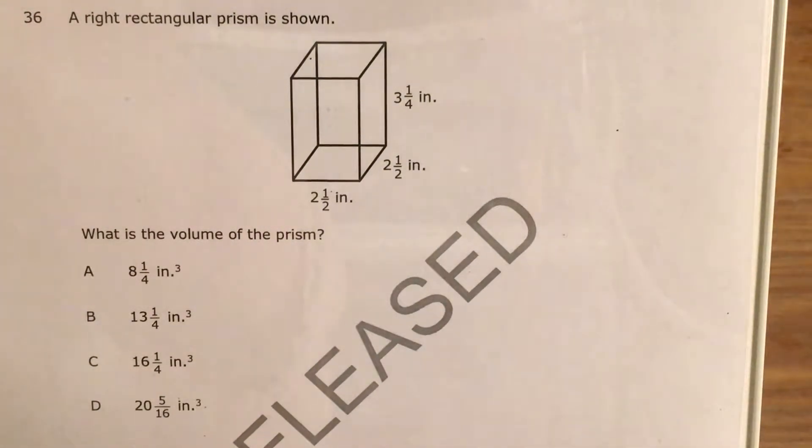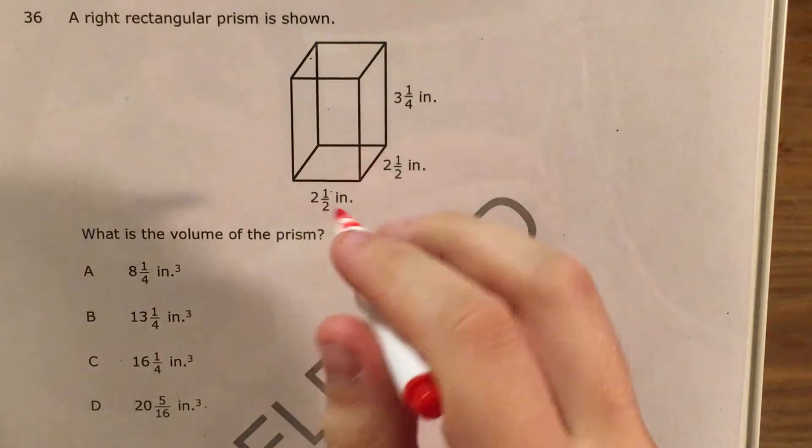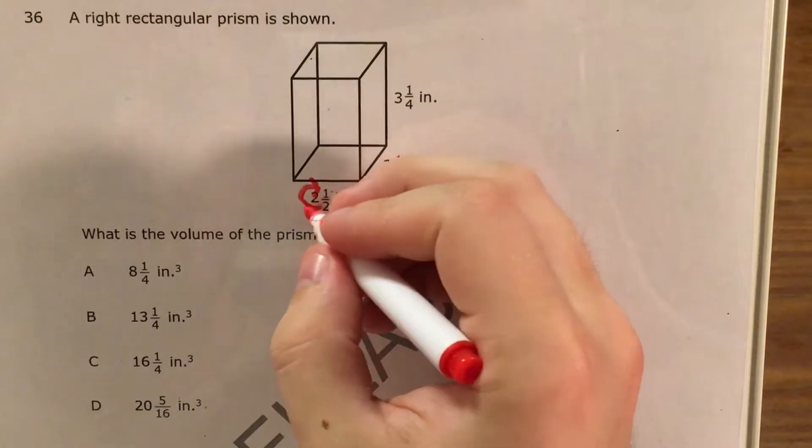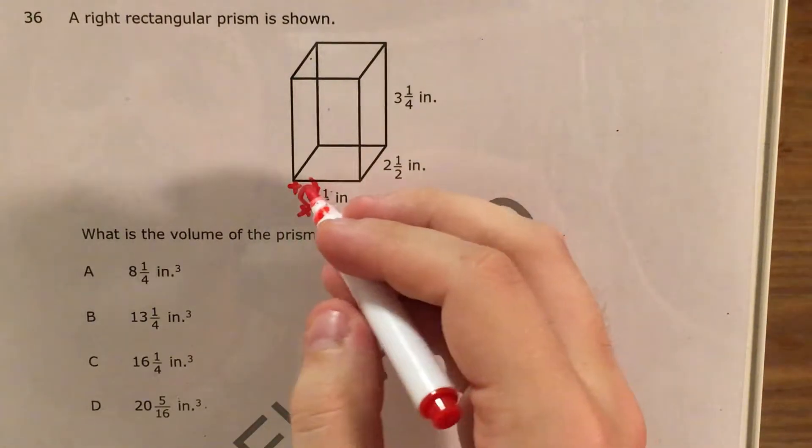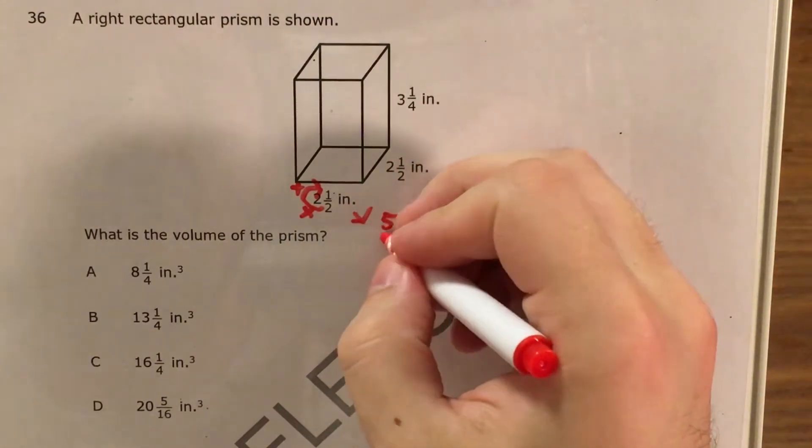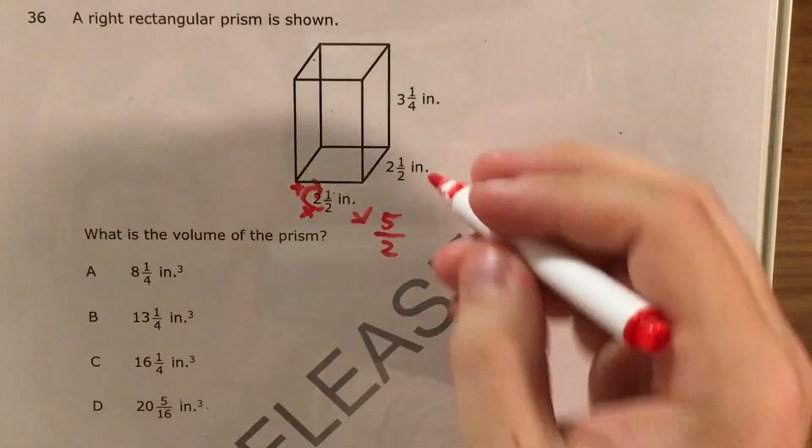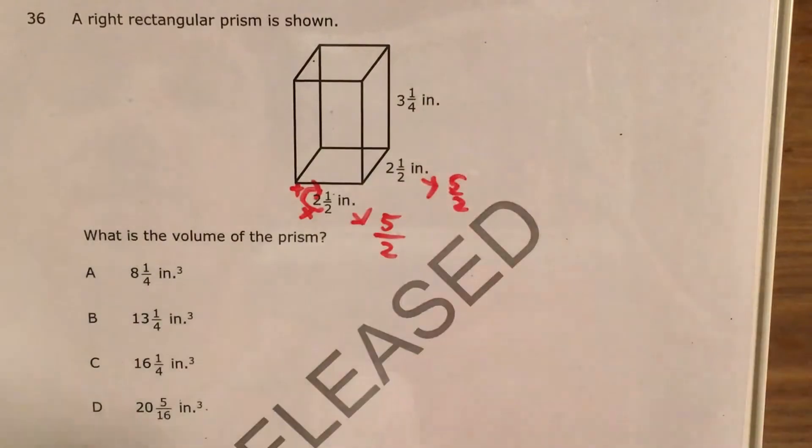First thing I'm going to do is change them from mixed numbers to improper fractions. It'll be a lot easier to work with these. Using my left and right swoosh strategy, 2 times 2 plus 1, 2 times 2 is 4, 4 plus 1 is 5 halves, so 2½ is equivalent to 5 halves.